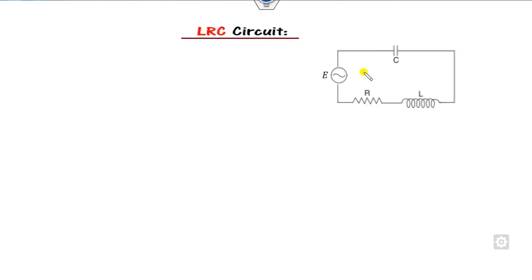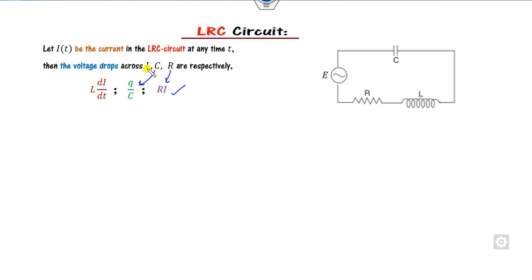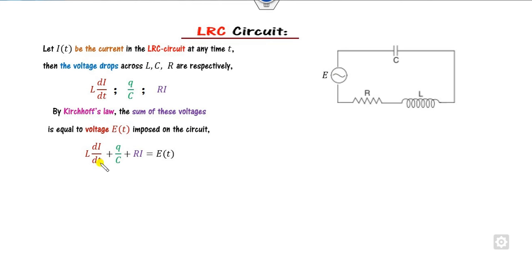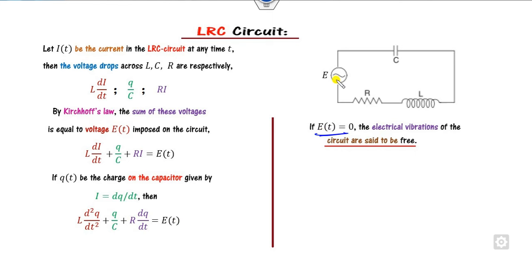For the LCR circuit, all of L, C, and R are connected in series with an external voltage applied. The voltage across L is L·di/dt, across R is IR (Ohm's law), and across C is Q/C. Applying Kirchhoff's law gives the total sum equal to E. Substituting I = dQ/dt yields a second-order non-homogeneous differential equation, since the right-hand side is non-zero. If E(t) = 0, the circuit is said to be free.